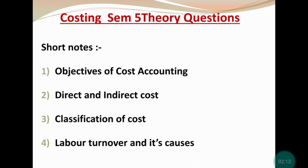Next, you will learn direct and indirect cost — this is from the cost sheet chapter. Direct cost means direct material, direct wages, and direct expenses; give a brief description of these. Indirect cost covers factory, office, and selling costs.